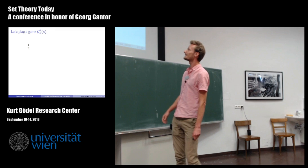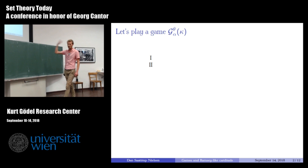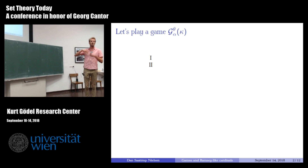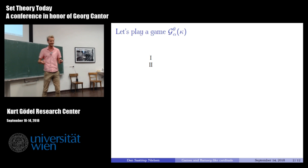So let's play a game. This game has three parameters: θ, α, and κ, which we will define as we go. κ will be a regular cardinal. This is one of the standard set-theoretic games — we have two players, both with perfect information, and they take turns playing.